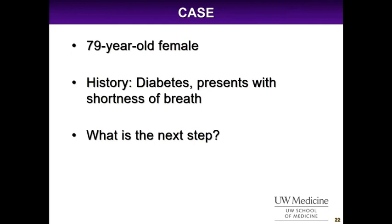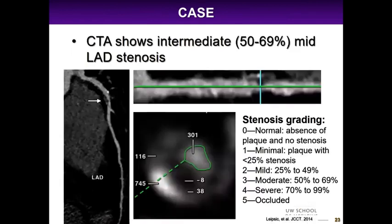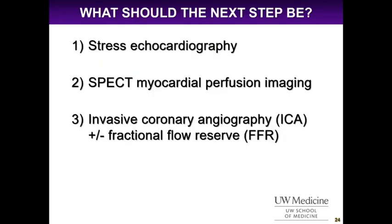Going back to our patient at intermediate risk for CAD, we decided to get a coronary CTA. The grading system gives: 0 for normal, 1 for minimal stenosis (less than 25%), 2 for mild (25–49%), moderate (50–69%), severe (75–99%). This patient had intermediate stenosis with mostly non-calcified plaque in the mid-LAD, moderately stenosed on cross-sectional view. The next step options are stress echo, SPECT perfusion study, or cath with fractional flow reserve. FFR is invasive, requires extra time and radiation, is more costly, and requires vasodilator administration.